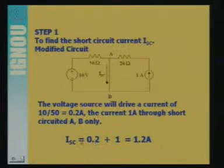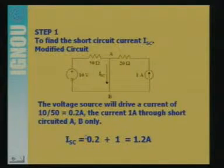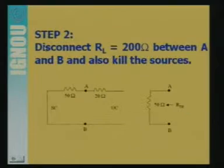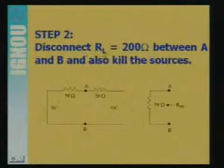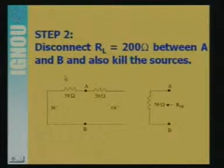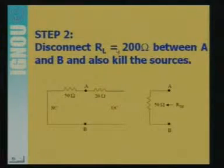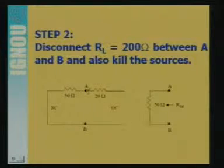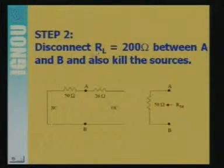The total current ISC equals 0.2 plus 1, which equals 1.2 ampere. This is the short circuit current — the equivalent current of the Norton equivalent circuit. Now we have to find the equivalent impedance. The Norton equivalent circuit has one current source and one parallel resistance or impedance, so we need to find the value of this parallel impedance.